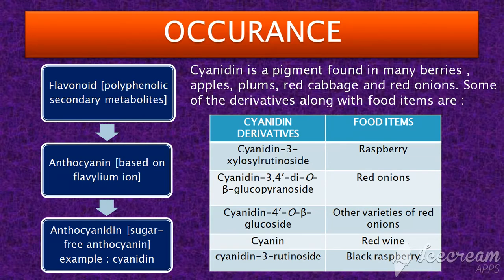Anthocyanidin belongs to the subclass polymethine, i.e., having an odd number of methine groups, which is the CH group. The most common anthocyanidin is cyanidin, which accounts for 30% distribution in nature.